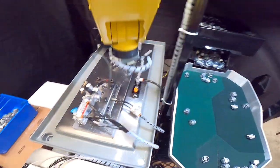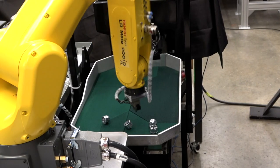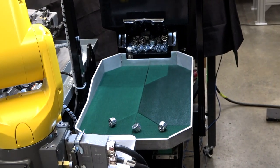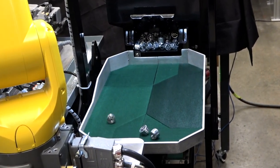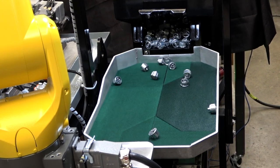The FANUC vision system will monitor the table to ensure parts are available for the robot to pick up. If there are not enough parts available, the hopper is vibrated to feed parts to the robot.